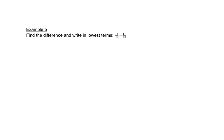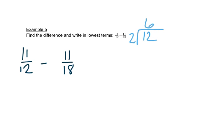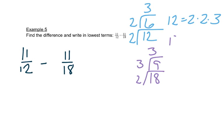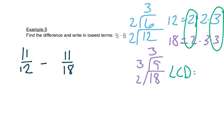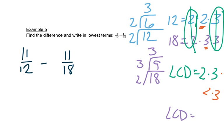In this problem we have eleven twelfths minus eleven eighteenths. The denominators are not the same, so we look at twelve and eighteen. The prime factorization of twelve is two times two times three, and the prime factorization of eighteen is two times three times three. We write what's in common once and then include what's left: two times three times two times three. Multiplying these together: two times three is six, times two is twelve, times three is thirty-six. So the LCD is thirty-six.